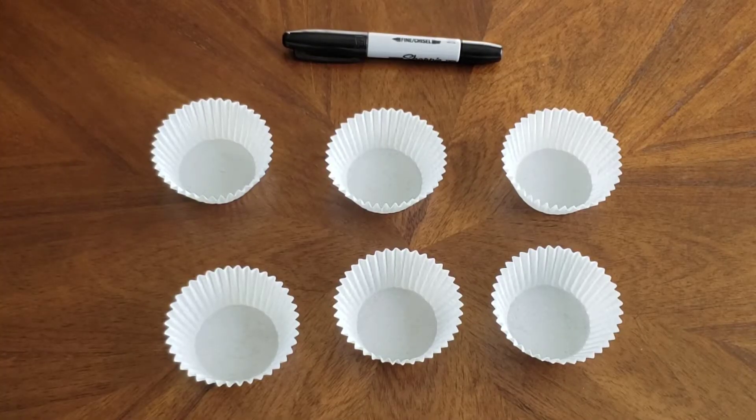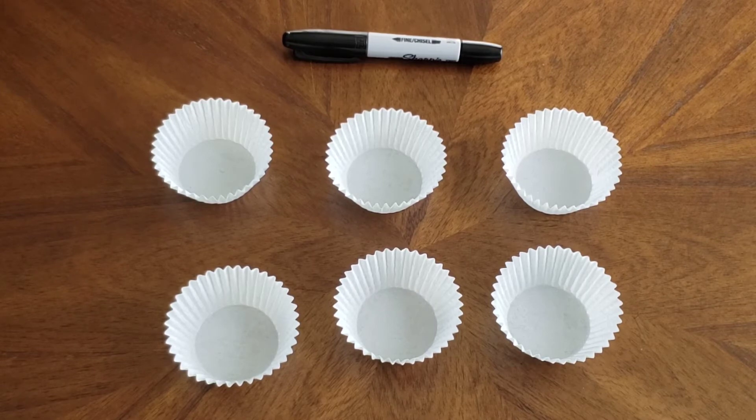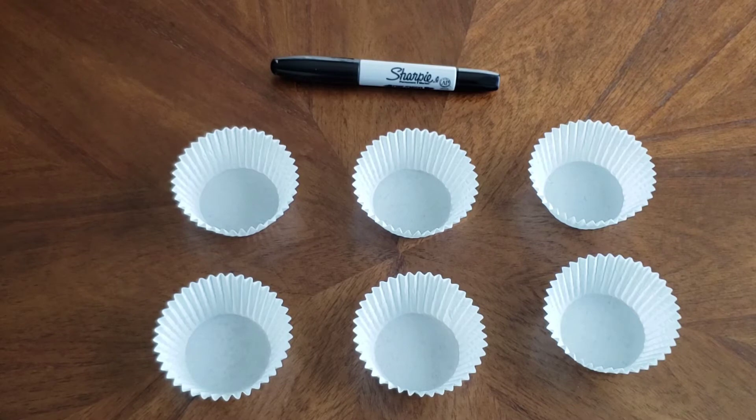Your first step is to write math problems in the tins. You can adjust the problems based on whatever your child is learning at the time. For very young children, you could even just put numbers if they're working on number recognition. Make a lot so that you can do multiple rounds and not have to pause and rewrite problems every single time.